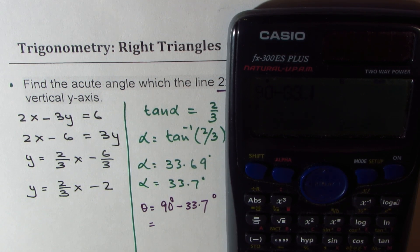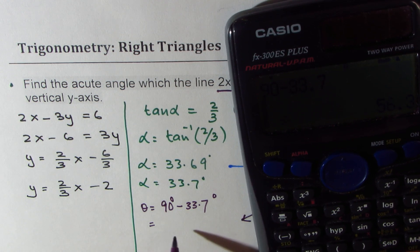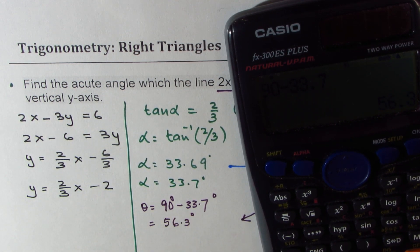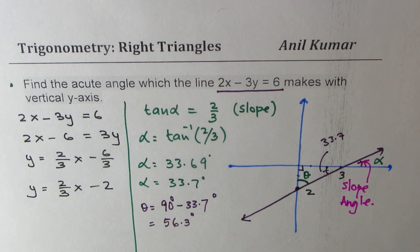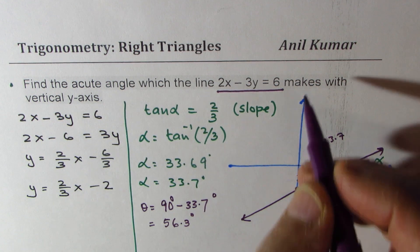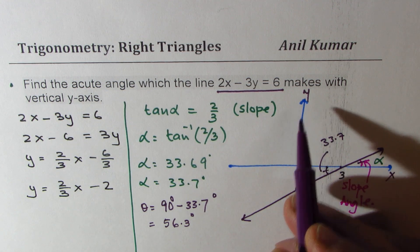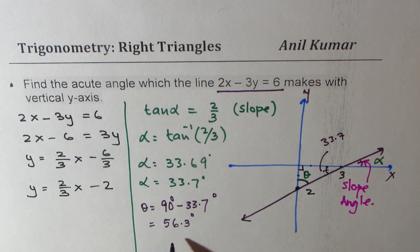90 minus 33.7 and that gives you in decimals 56.3. So that is how you find angle of a line with the y-axis. With the x-axis you need to find the slope angle. With the y-axis it is always a complementary angle as we have seen in this particular example.